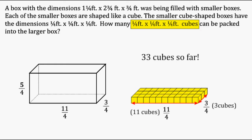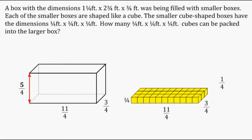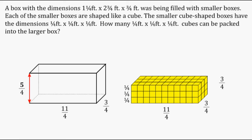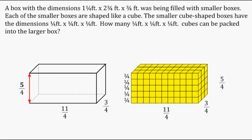Now let's figure out how many boxes we can pack going upward. So far we have one layer, with a height of one quarter of a foot. Adding a second layer brings us to two quarters, three layers to three quarters, four layers to four quarters — exactly one foot — and five layers gives us five quarters, or one and one quarter feet in height.